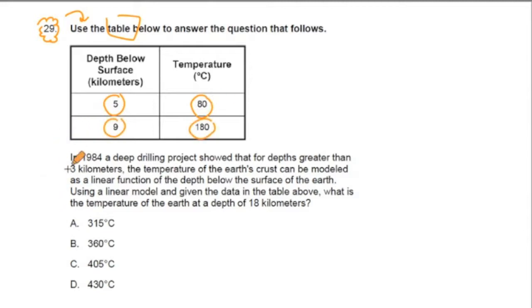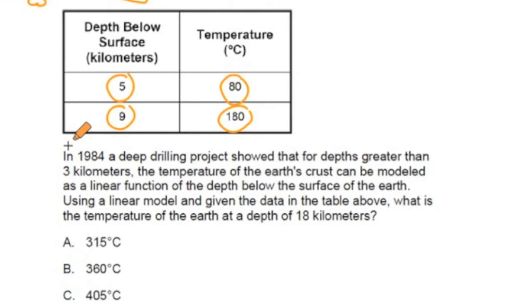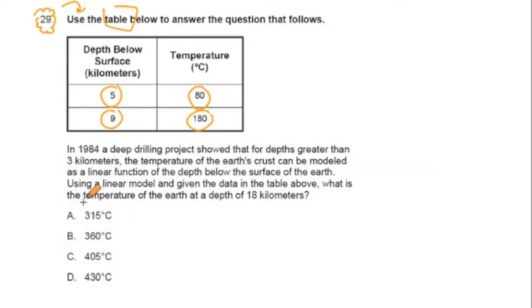Then we're given our scenario to explain this table. In 1984, a deep drilling project showed that for depths greater than 3 kilometers, the temperature of the Earth's crust can be modeled as a linear function of the depth below the surface of the Earth. Using a linear model and given the data in the table above, what is the temperature of the Earth at a depth of 18 kilometers? We have some options.